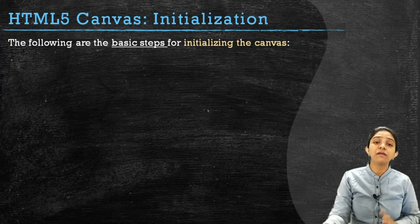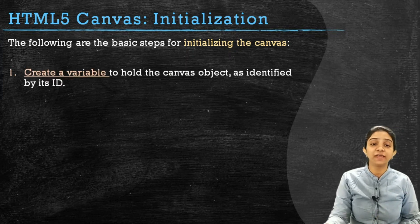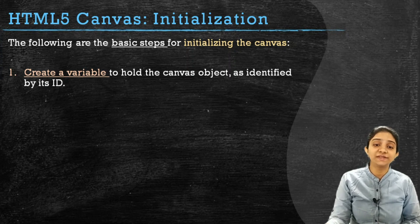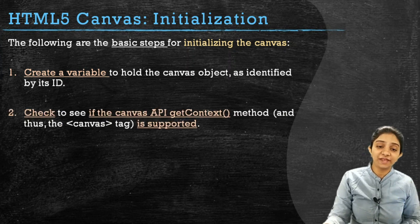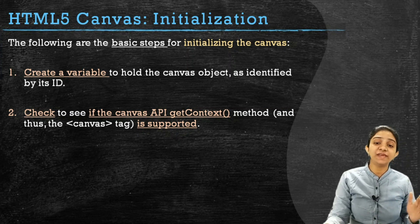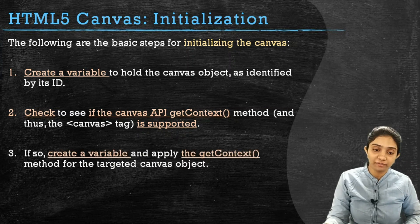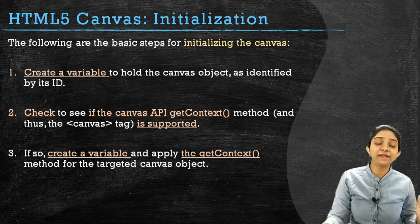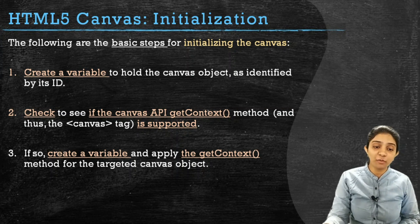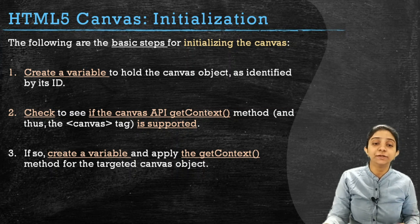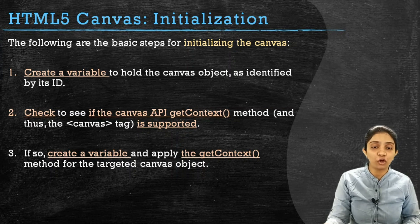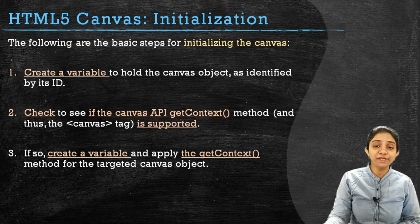There are three basic steps to initialize a canvas. The first step is to create a variable which holds the canvas object, identified by its id. The second step is to check whether the canvas API getContext method is supported or not. If the canvas getContext method is supported, we create a variable and apply the getContext method to the targeted canvas object. So, these are the three steps of initialization.